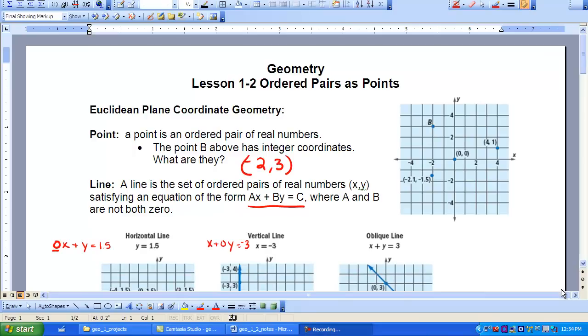In Euclidean Plane Coordinate Geometry, a line is considered to be a set of ordered pairs of real numbers, satisfying an equation of the form AX plus BY equals C, where A and B are both not zero.